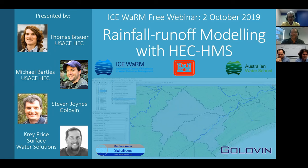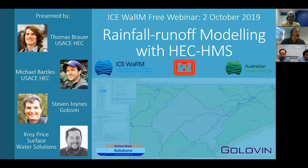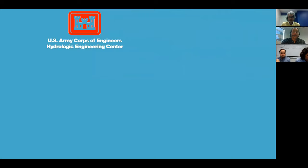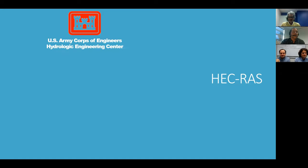Craig: First, an IT check — can you see my screen? Fantastic. I want to keep my remarks short so we can dive into Tom and Michael's content. I just want to introduce where we're at with the Hydrologic Engineering Center. We've had six or eight webinars on HEC-RAS with over 50,000 views. This is our first HMS webinar. HEC-RAS came from the HEC-2 package — a Fortran package that computed water surface profiles. What was the predecessor to HEC-HMS?